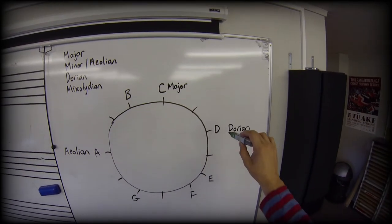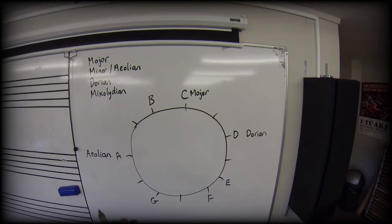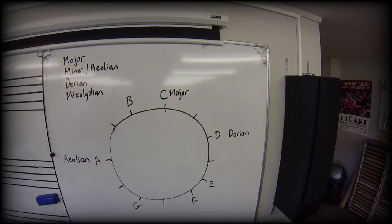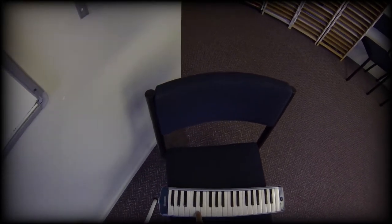So I know that if I go from D through to D and I observe the twos and ones I'm going to make a dorian pattern. So reset my D.